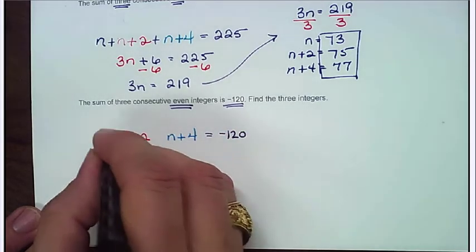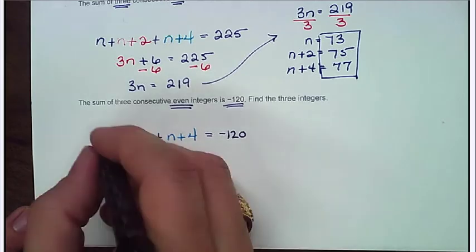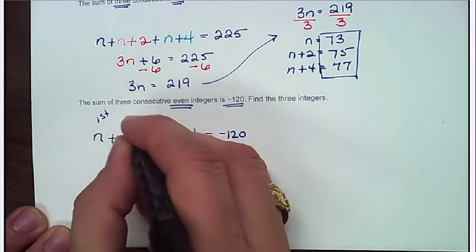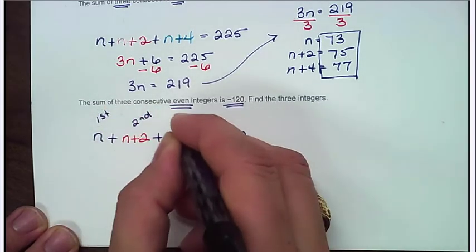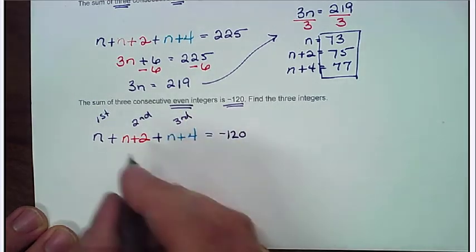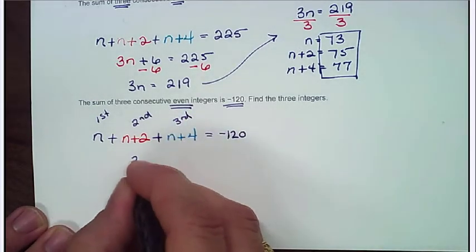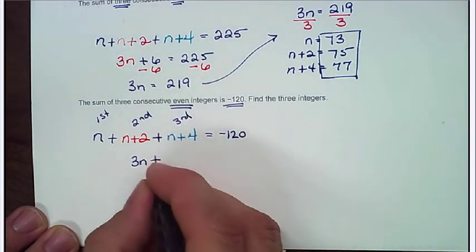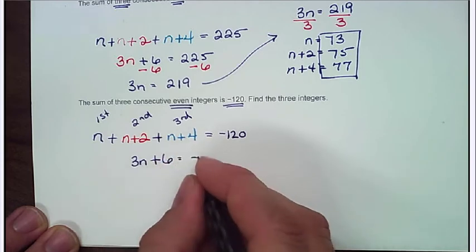We're going to equal that to a negative 120. And we're dealing with the sum. So we want pluses. So here's, again, remember this is our first. This is our second number. And this is our third number. So n plus n plus n, that's going to give me 3n. 2 plus 4 gives me 6. And that's going to equal negative 120.